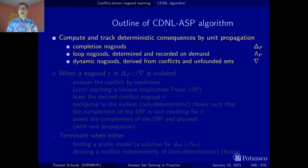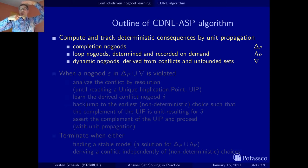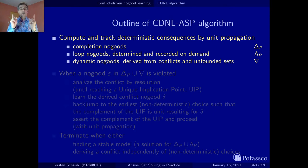When solving starts, we start from an empty assignment. Then we start unit propagation and deterministically assign truth values to variables until we reach a fixed point, because at that point we cannot calculate any new truth values. Then we pick a variable that we couldn't assign a truth value so far, pick a truth value, and assign it — this is called a non-deterministic choice. Then propagation resumes, and we continue: choice, propagation, choice, propagation, until we reach one of two outcomes.